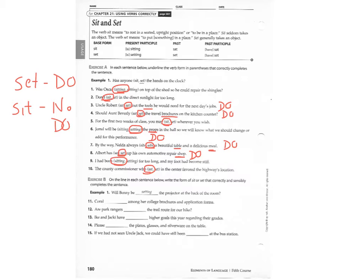So now in exercise B, what we want to do is fill in our correct forms for each one. That's why I do it on the side here, 11, 12, 13, 14, and 15. So number 11 is going to be sat. We don't have a direct object. For number 12, we want to use a present participle form because we have a form of be in front of it. We have are, and we're going to use setting because we're going to have a direct object, and that's going to be root.